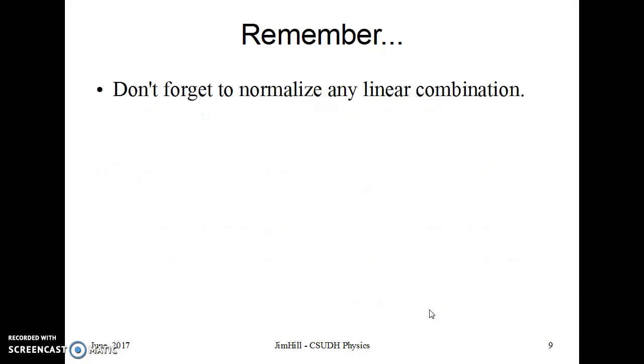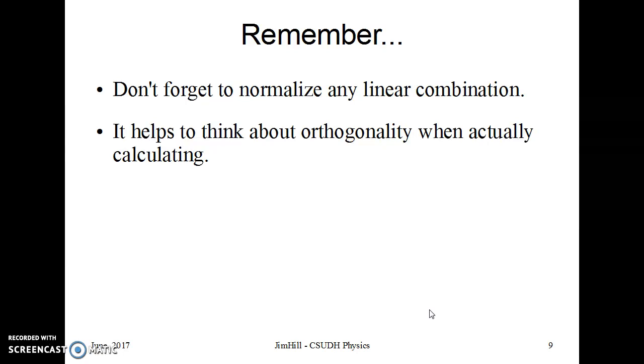Don't forget to normalize that linear combination. If you're adding two states, you've got to divide by something to make it still normalized. It helps to think when you do these problems about orthogonality of states. That is, when I look at the integral on all space of two different solutions to that wave function, I get zero, but two of the same ones integrated on all space, I get one. That's this thing we call a Kronecker delta.